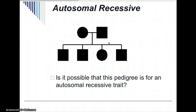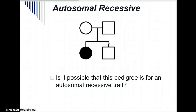Is it possible that this pedigree is for an autosomal recessive trait? We know that both parents are homozygous recessive and all the kids are homozygous recessive. So it's definitely possible that this is an autosomal recessive trait by looking at this pedigree — both parents have it and all the kids have it. For the next pedigree, we have two unaffected parents and one unaffected offspring. If two unaffected parents have an affected offspring, then we know it's a recessive trait.